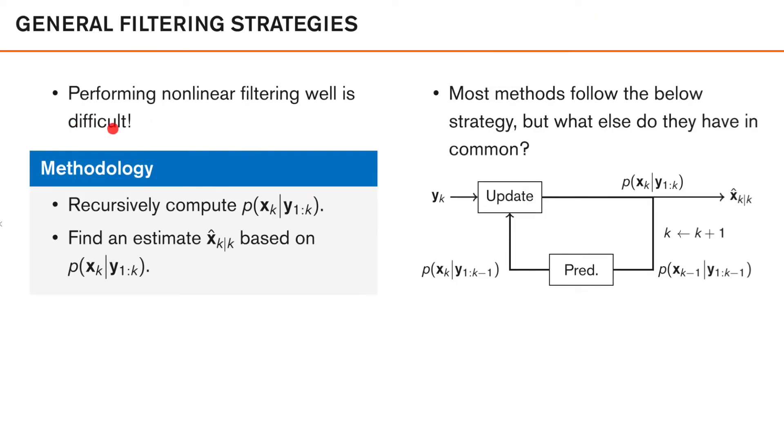Performing nonlinear filtering well is difficult. Compared to the linear case where we know how to calculate the true posterior density, in the nonlinear case we need to make approximations and simplifications which naturally will affect our result. The general methodology of all our filtering methods is to recursively, that is each time we get a new observation, compute the posterior distribution or an approximation of it. Based on this posterior distribution, we then find an estimate of our state using, for example, the posterior mean in the MMSE case or the most probable value if we are doing MAP estimation.